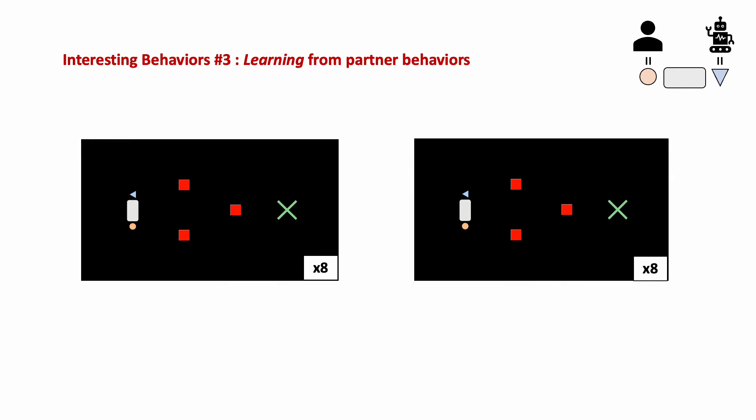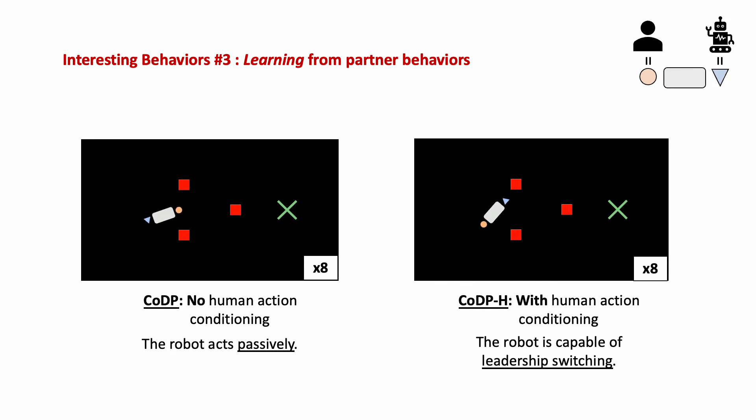In this third example, we see that conditioning on past human actions leads to different learned behaviors. Without human action conditioning, the robot acts passively. With past human action conditioning, we see proactive behavior.